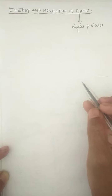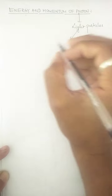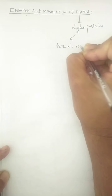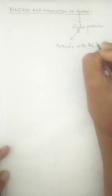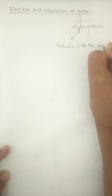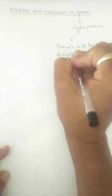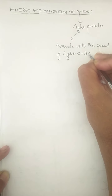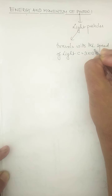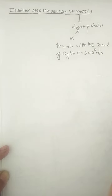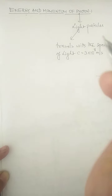Photons are light particles and they travel with the speed of light. The speed of photon is marked by letter c. The speed of light in air or vacuum is 3×10⁸ meters per second, and this is the maximum speed at which light or photon particles can travel.